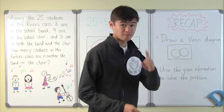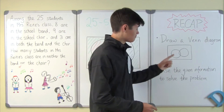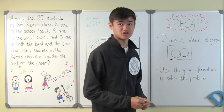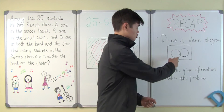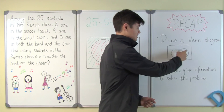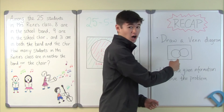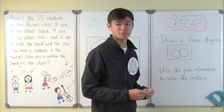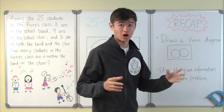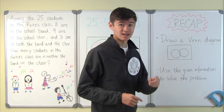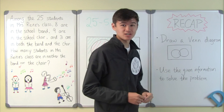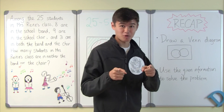Let's recap. First, draw a Venn diagram to represent the situation. Use circles to represent different groups of objects, and use a rectangle to represent all objects. Next, use the given information to solve the problem.